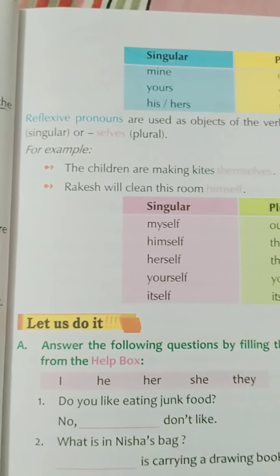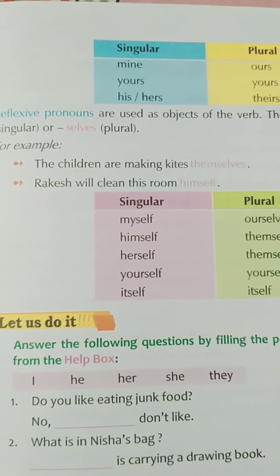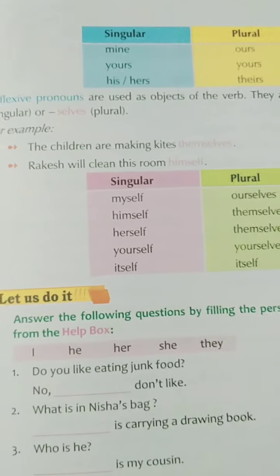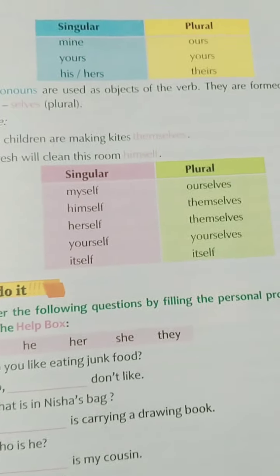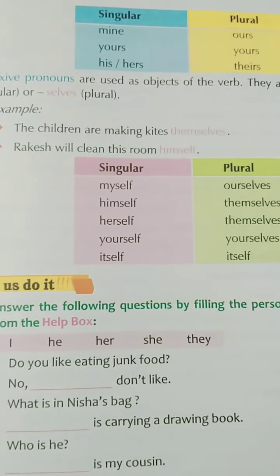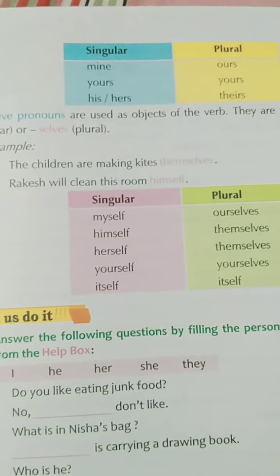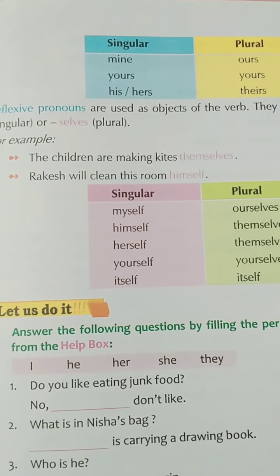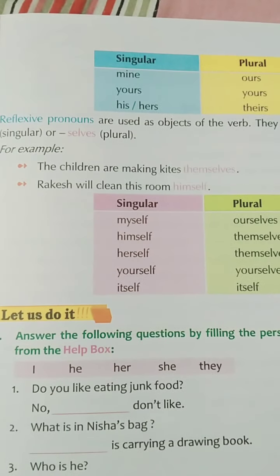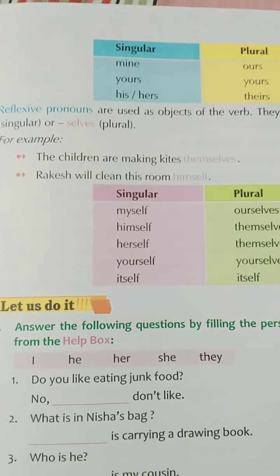Reflexive pronouns are used as the object of the verb. They are formed by adding '-self' or '-selves'. For example: the children are making kites themselves; Rakesh will clean this room himself. The reflexive pronouns are: myself, ourselves, himself, themselves, herself, yourself, and yourselves. I hope you all have understood this chapter, which is quite small.